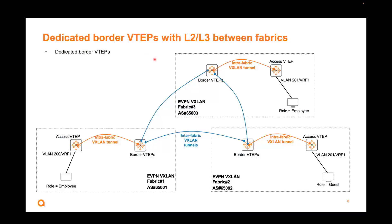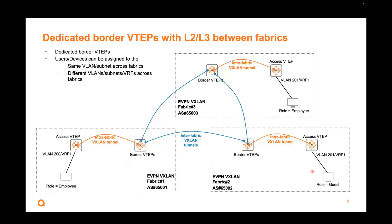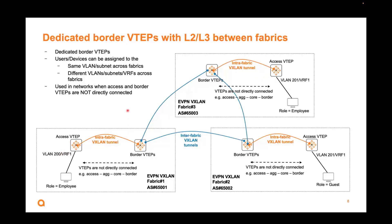In the campus, you can deploy multiple fabrics with dedicated border VTAPs, where each fabric has its own dedicated border to communicate between them. This supports both layer 2 — same VLAN across fabrics, such as VLAN 201 to 201 — as well as layer 3 with different VLANs like 200 and 201. This is typically used when access and border VTAPs are not directly connected, such as access to core to border, with multiple hops.